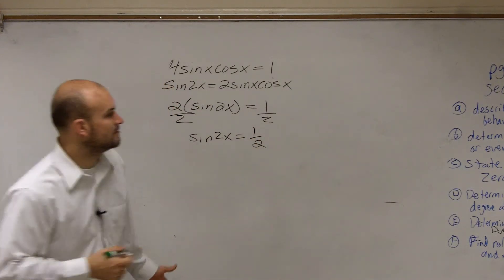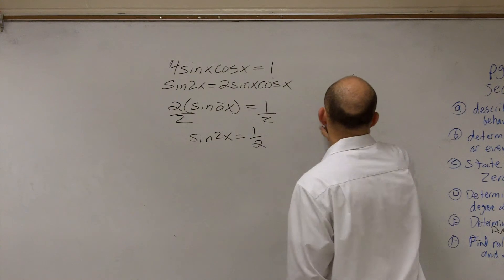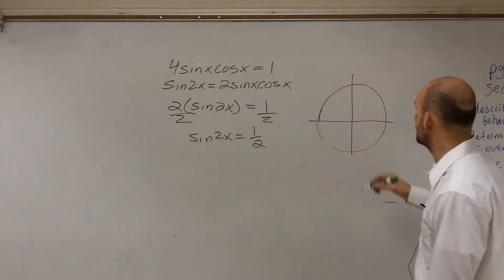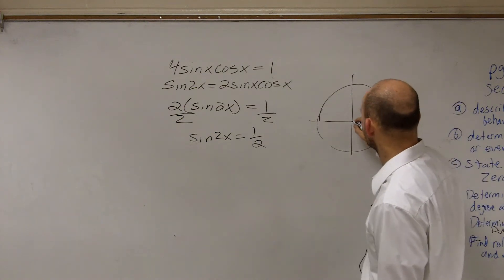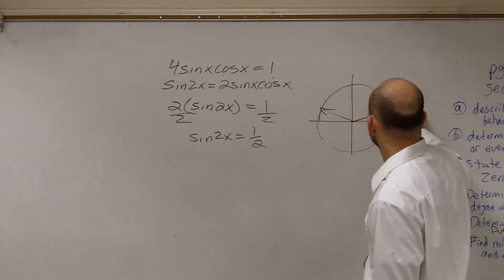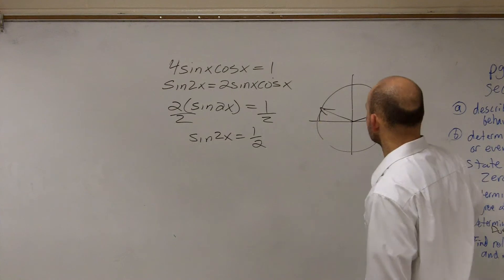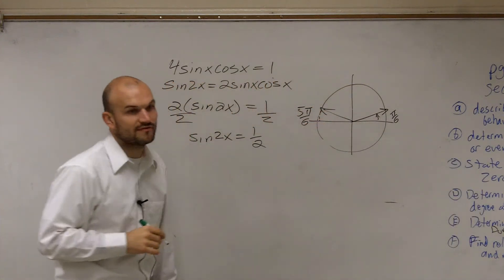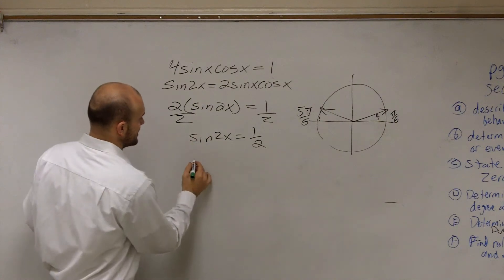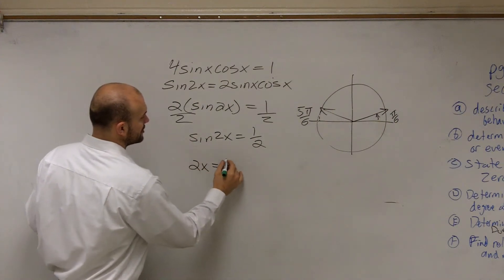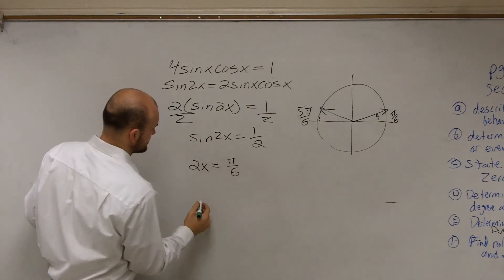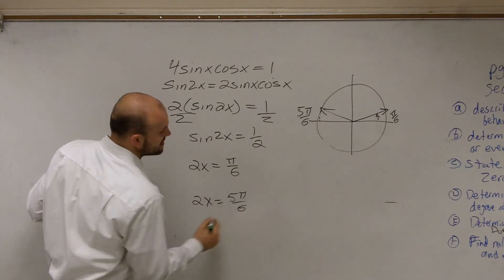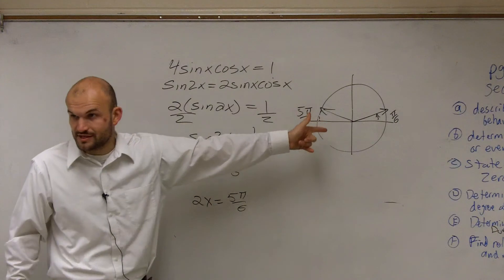So now I can go and evaluate and say, when is the sine going to equal 1 half? Well, we have pi over 6 and 5 pi over 6. So if I wanted to find all the solutions, I could say 2x equals pi over 6 and 2x equals 5 pi over 6.